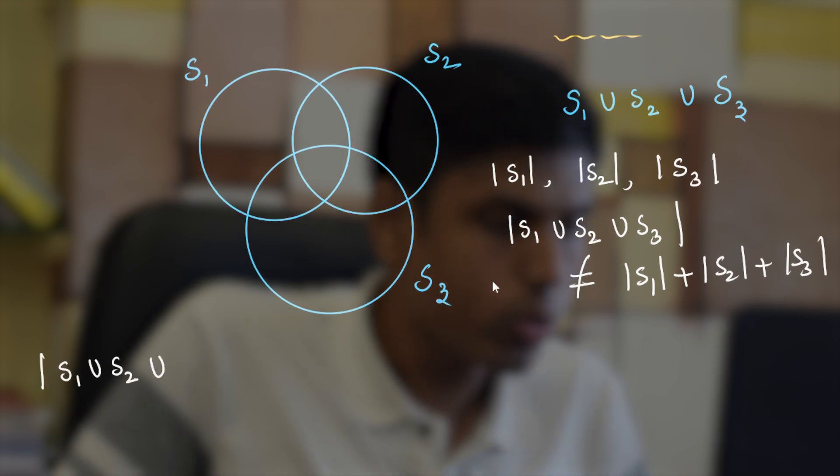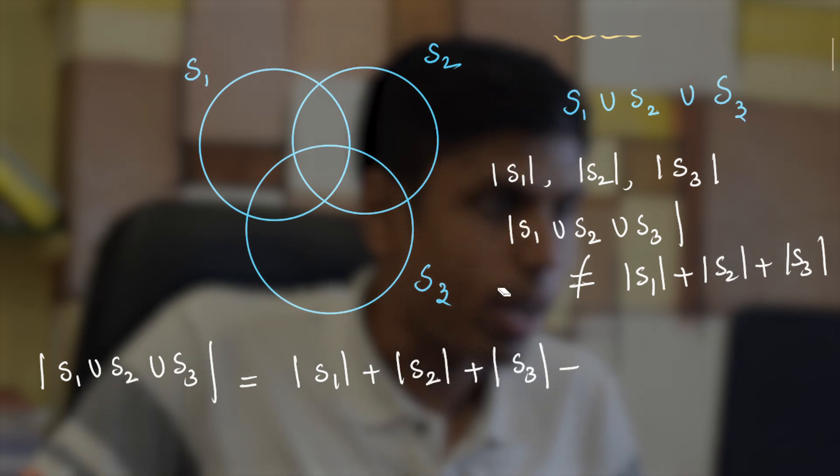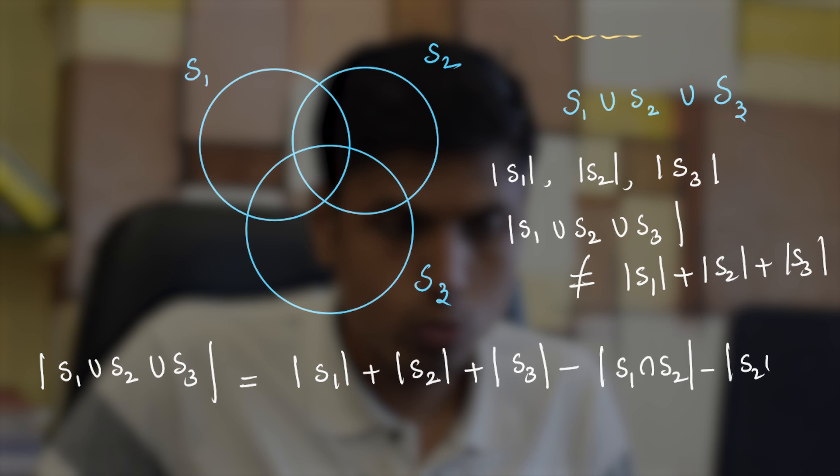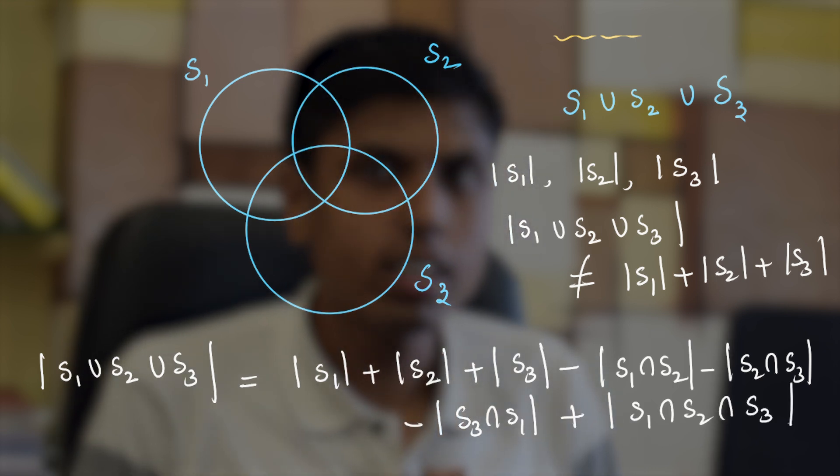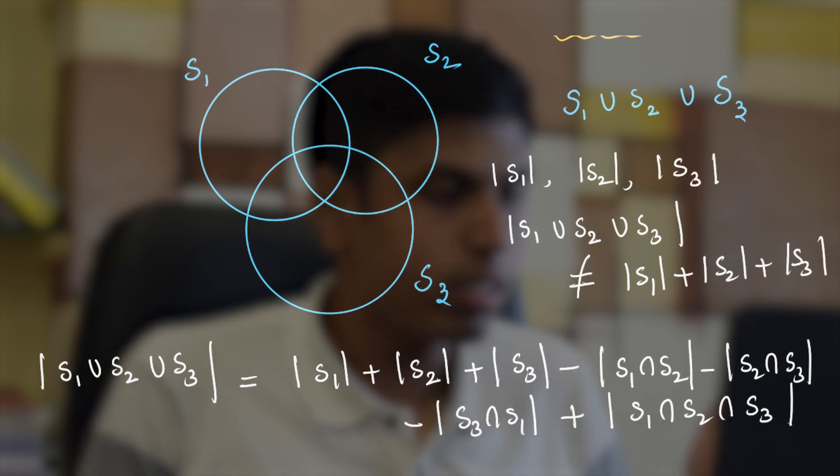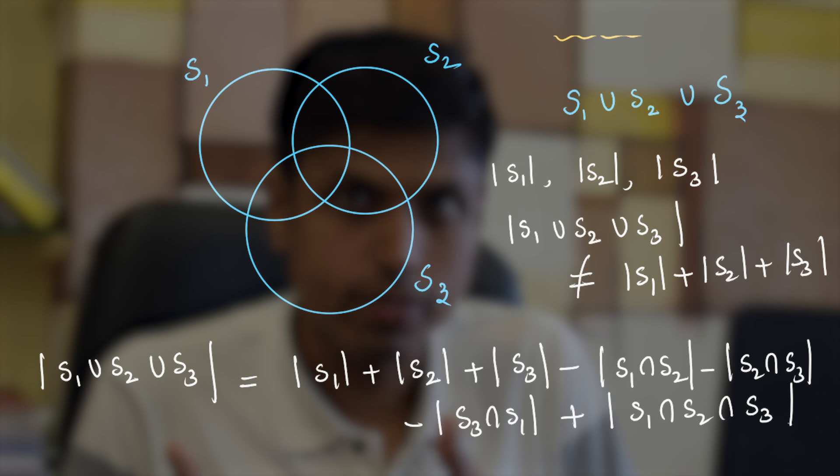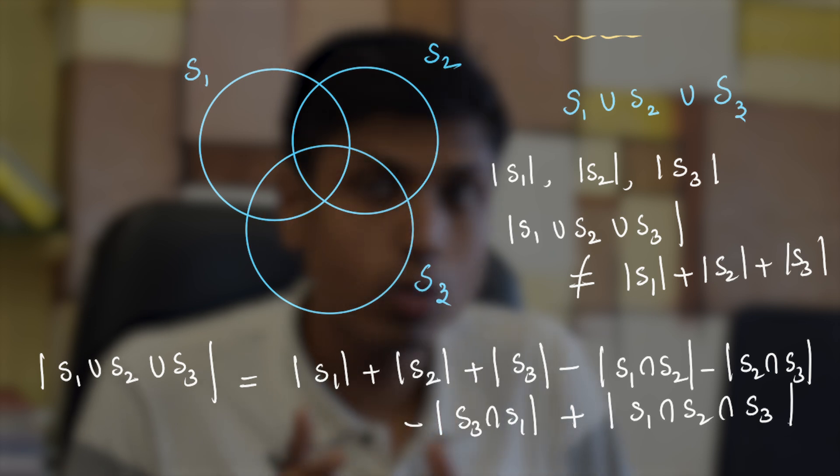Cardinality of S1 union S2 union S3 is actually equal to the cardinality of S1 plus cardinality of S2 plus cardinality of S3 minus cardinality of S1 intersection S2 minus cardinality of S2 intersection S3 minus cardinality of S3 intersection S1 plus cardinality of S1 intersection S2 intersection S3. You can clearly observe that the signs alternate when you consider the number of sets that you take for the intersection. If you take two sets for intersection you get a negative sign, and when you take three sets for intersection you get a positive sign.